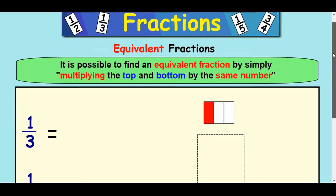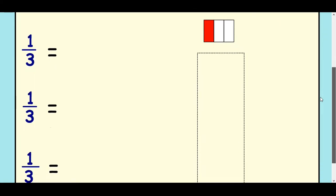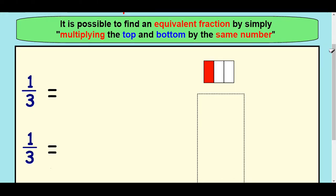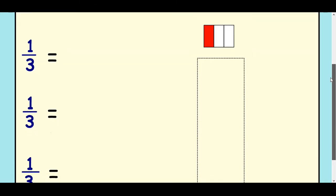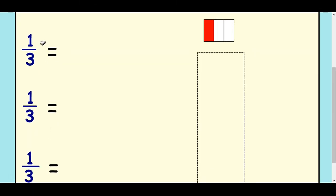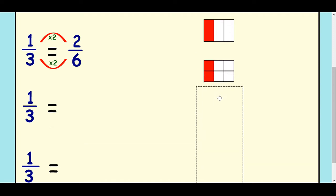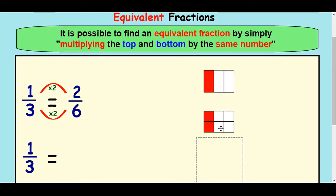Now let's look at how to generate an equivalent fraction without having a diagram. Let's imagine you're starting with a third and you're trying to create an equivalent fraction. This is possible by multiplying the top and the bottom of your original fraction by the same number. So I've got a third. I want to times the top and the bottom by a number — I'll start with two, but I need to be careful that I'm multiplying both top and bottom by two. So one times two is two, and three times two is six. One-third is the same as two-sixths. In picture form: there's one-third — one piece out of three — and here is two-sixths, two pieces out of six. You can see that's the same as the third; the red bit is a third of the total shape.